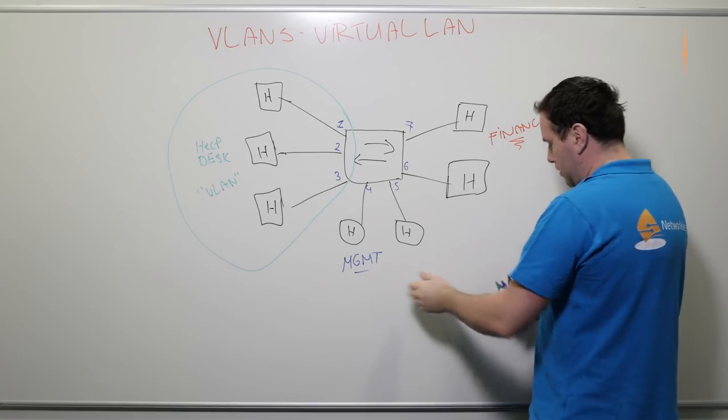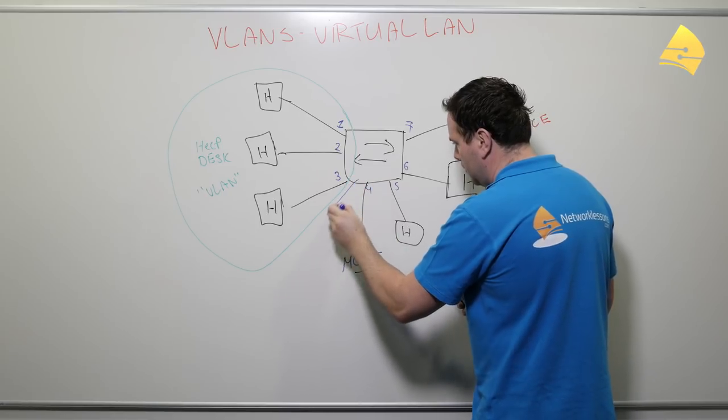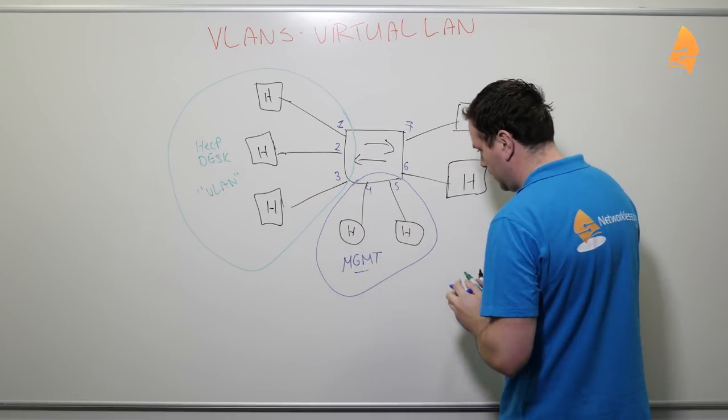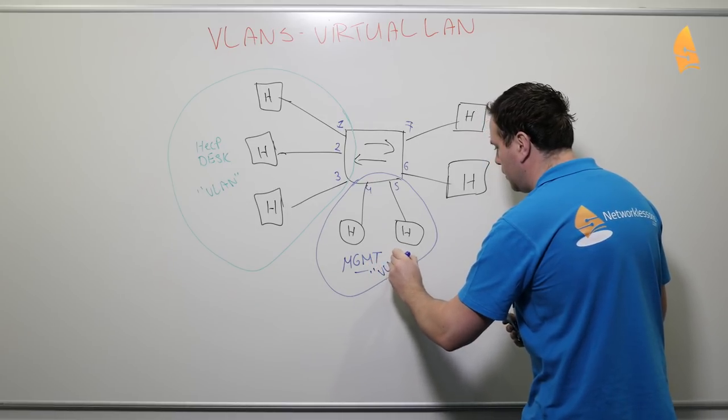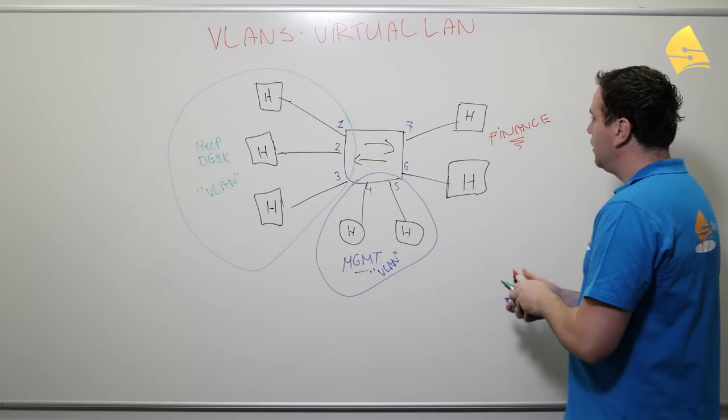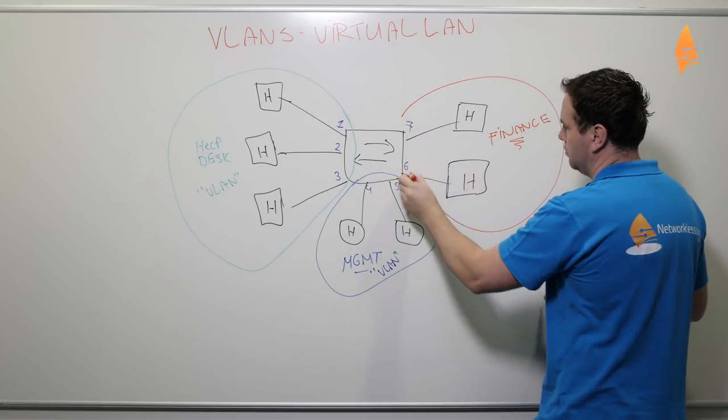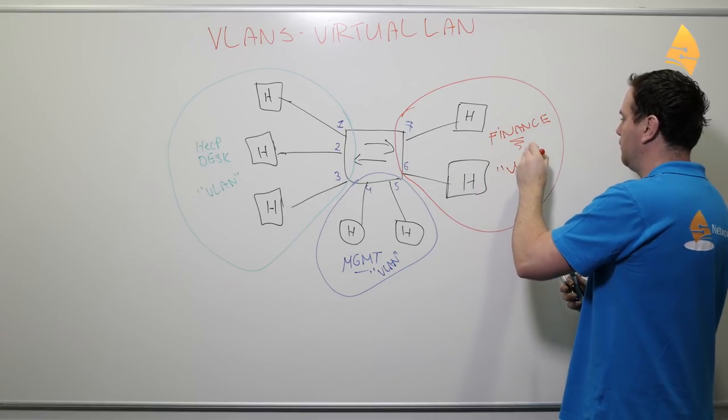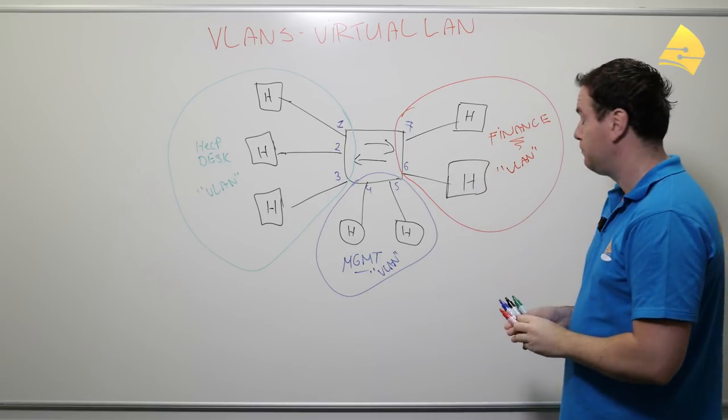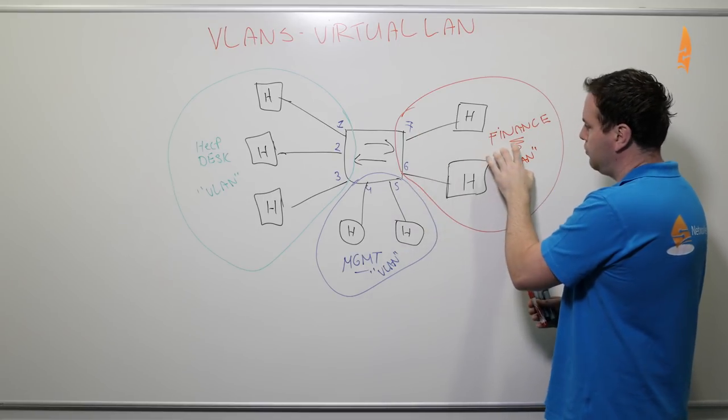Now of course we can also create a VLAN for the management guys over here. Like this. So this will become our management VLAN. And so what we do is we will assign interface six and seven to this VLAN.